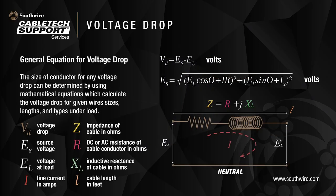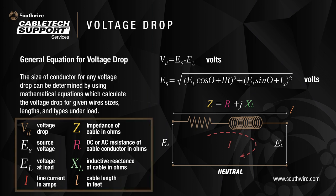The general equation for voltage drop can be used to determine the size of conductor, knowing wire sizes, lengths, and types under load. The main variables involved in the calculations are source voltage, voltage at load, the current in the cable or circuit, the impedance or resistance, and the cable length.